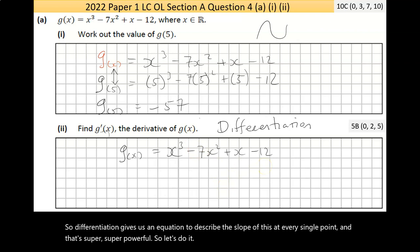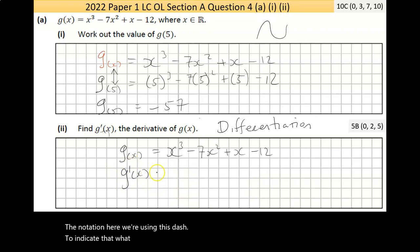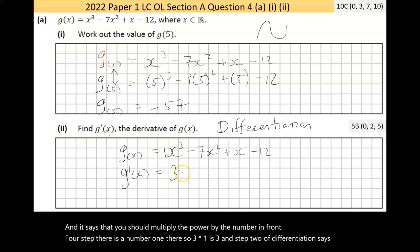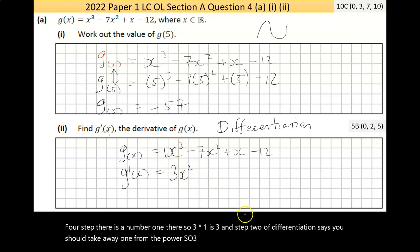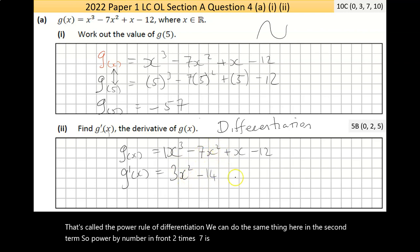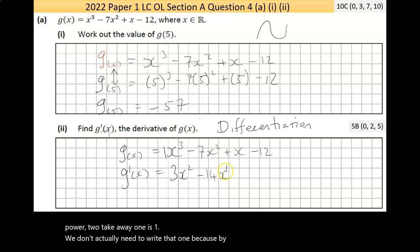So differentiation gives us an equation to describe the slope of this at every single point. The notation here, we're using this dash to indicate that what follows has been differentiated. And the rules of differentiation are fairly simple at the basic level. It says that you should multiply the power by the number in front. That's the first step. There's a number one there. So three times one is three.